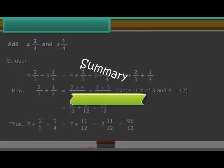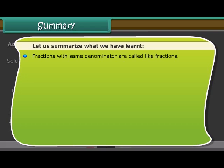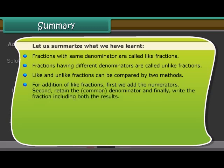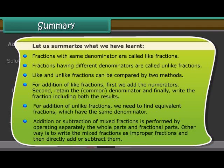Summary. Let us summarize what we have learned. Fractions with the same denominator are called like fractions. Fractions having different denominators are called unlike fractions. Like and unlike fractions can be compared by two methods. For addition of like fractions, first we add the numerators, then retain the common denominator, and finally write the fraction including both results. For addition of unlike fractions, we find equivalent fractions which have the same denominator. Addition or subtraction of mixed fractions is performed by operating separately on the whole parts and fractional parts, or by writing the mixed fractions as improper fractions and then directly adding or subtracting them.